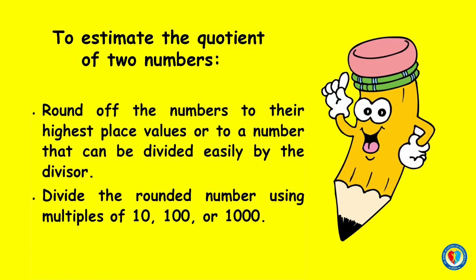Always remember that to estimate the quotient of two numbers, round off the numbers to their highest place values or to a number that can be divided easily by the divisor. Then divide the rounded number using multiples of 10, 100, or 1,000. That's all for today, kids. I hope you enjoyed learning. See you in our next video. Bye!